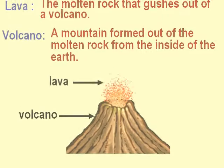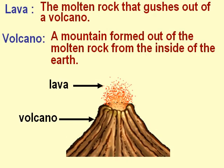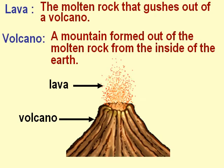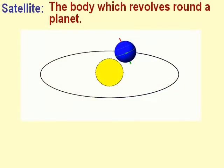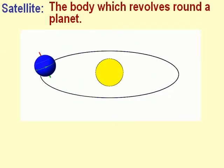Lava is the molten rock that gushes out of a volcano. Volcano is a mountain formed out of the molten rock from the inside of the earth. Satellite is the body which revolves around a planet.